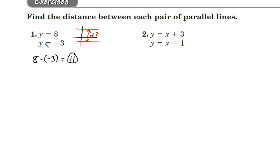Now, this also works if you have vertical lines, like x equals a number, or x equals a number. You would just simply subtract them to find out how far it is between them. And be sure to take the absolute value. If you get a negative distance, we don't accept that. We have to have positive distance.